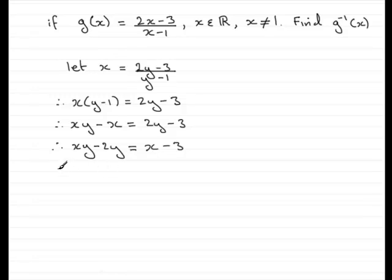Pull out y as a common factor. We have y times x minus 2 and that equals x minus 3. Divide both sides by x minus 2 and that gives me y is equal to x minus 3 all divided by x minus 2.